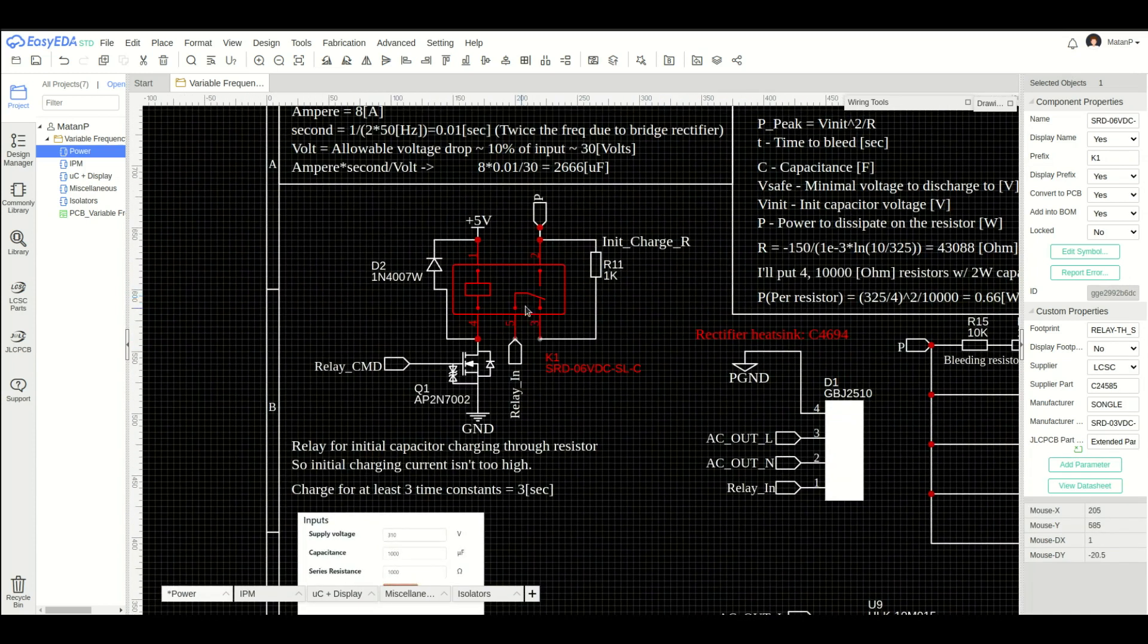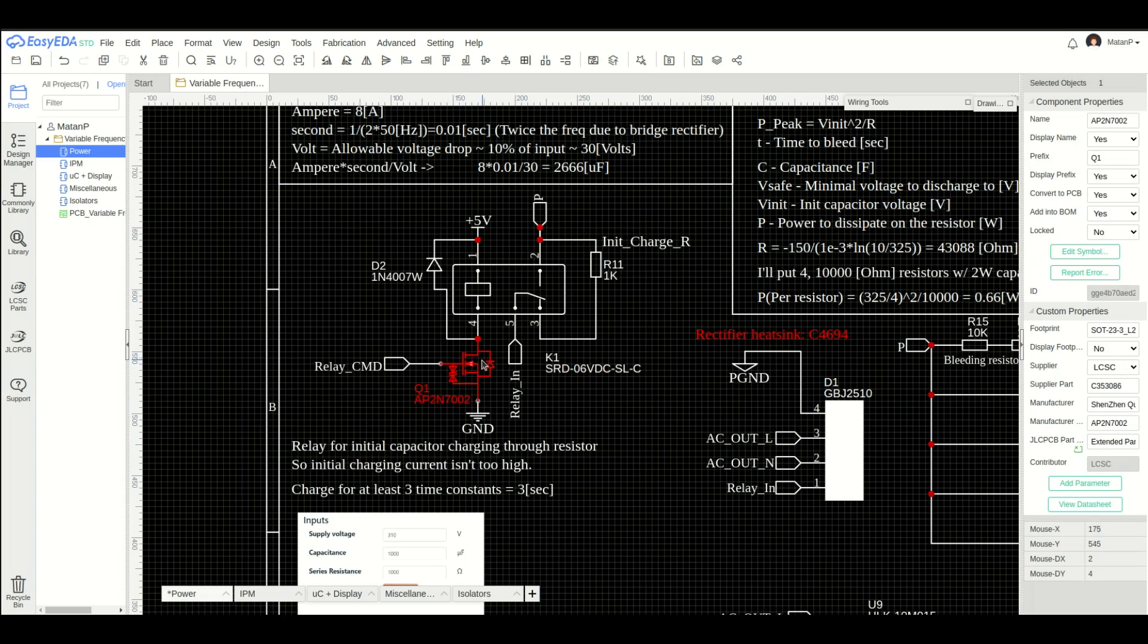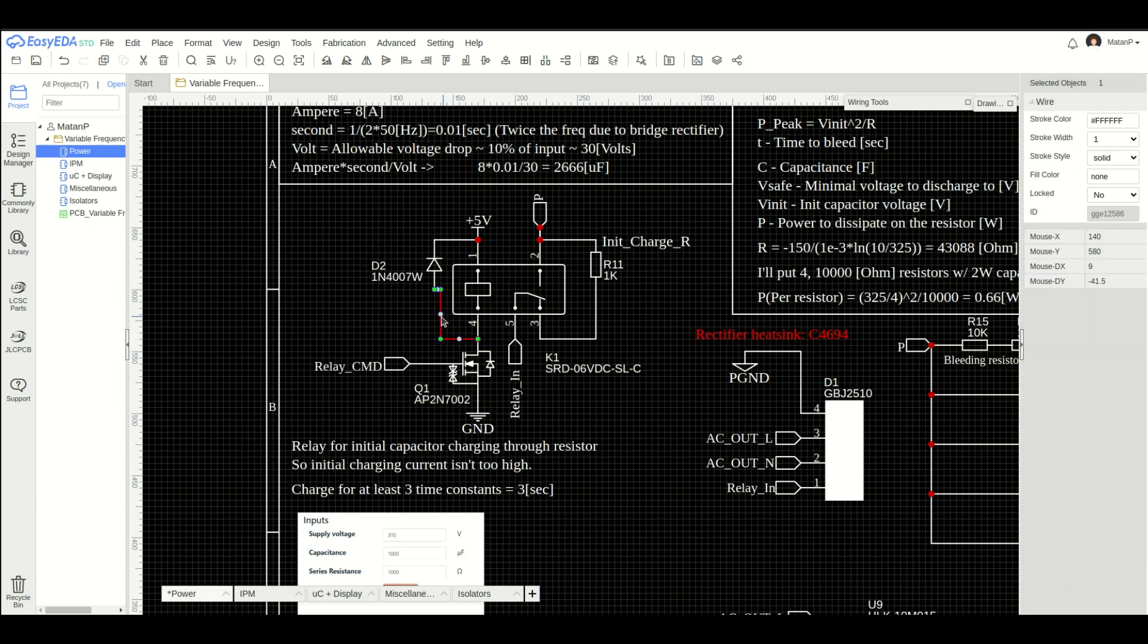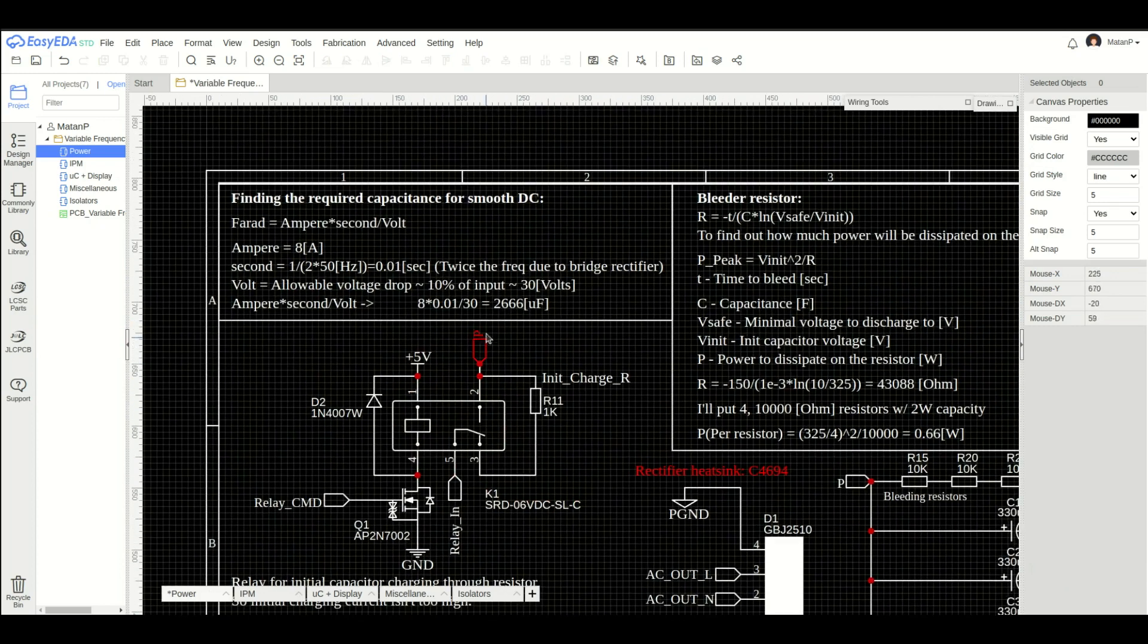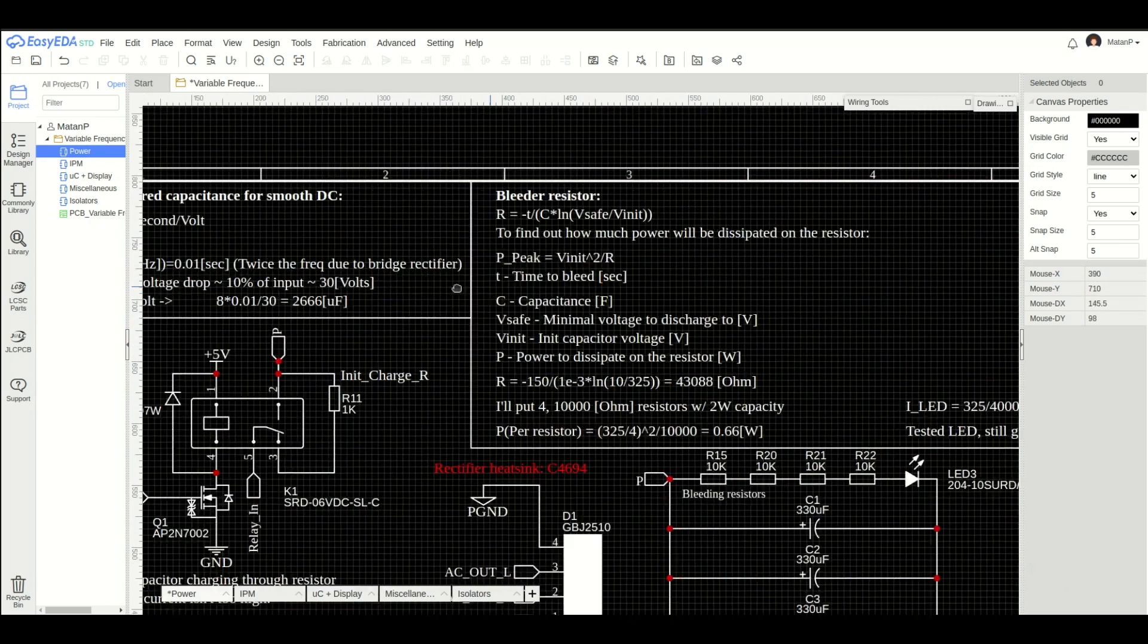Here's the bypass relay. I'm activating it using a transistor, since it requires a relatively high current, compared to what the microcontroller can output. And I also use the flyback diode. And these are some calculations I already talked about regarding the required capacitance and the bleeding resistors.